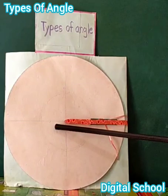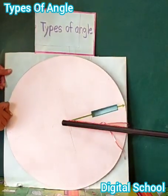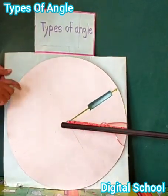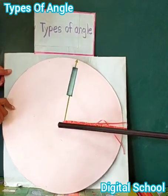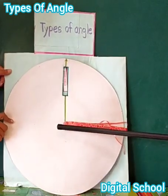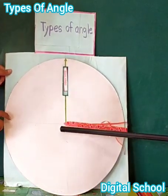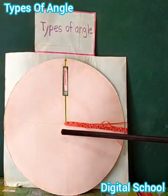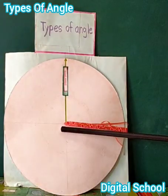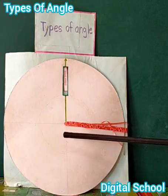Assalamu alaikum, I am Asuna. Today we will learn about types of angle. Dear friends, look at the board. This is a right angle. The definition of right angle: an angle of measure 90 degrees is called a right angle. In the figure, angle ABC is a right angle. Thank you.